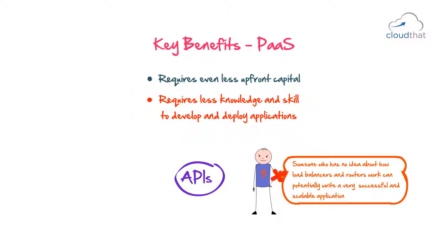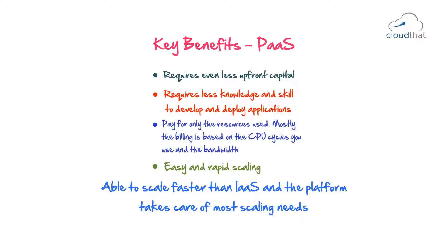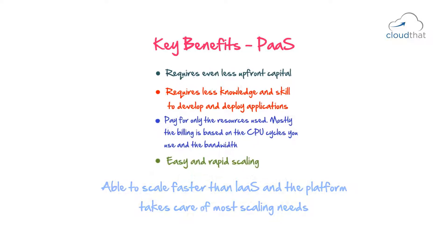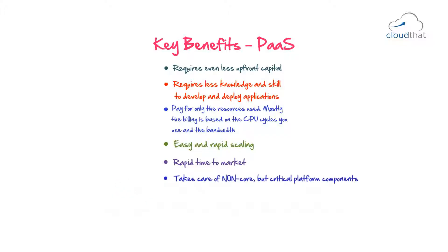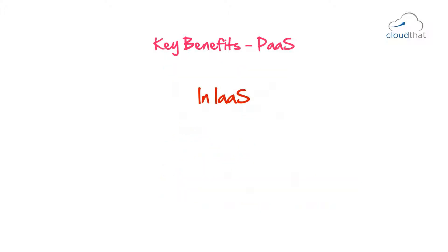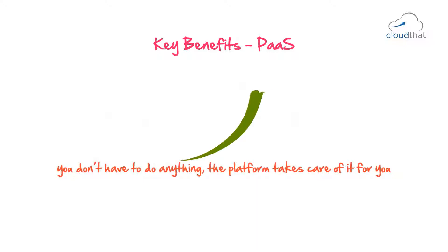While using Platform as a Service, you pay for only the resources used — billing is mostly based on the CPU cycles you use and the bandwidth. PaaS allows for easy and rapid scaling; you can scale faster than with Infrastructure as a Service, and the platform takes care of more scaling needs. Using PaaS leads to rapid time to market — in IaaS you would still have to architect different IT infrastructure components, but here you just code and deploy. PaaS also leads to a drastic reduction in IT staff required for software maintenance. In IaaS the hardware isn't your problem, but you'd still need a software maintenance team for patching and upgrading. With PaaS, the platform takes care of all of that.